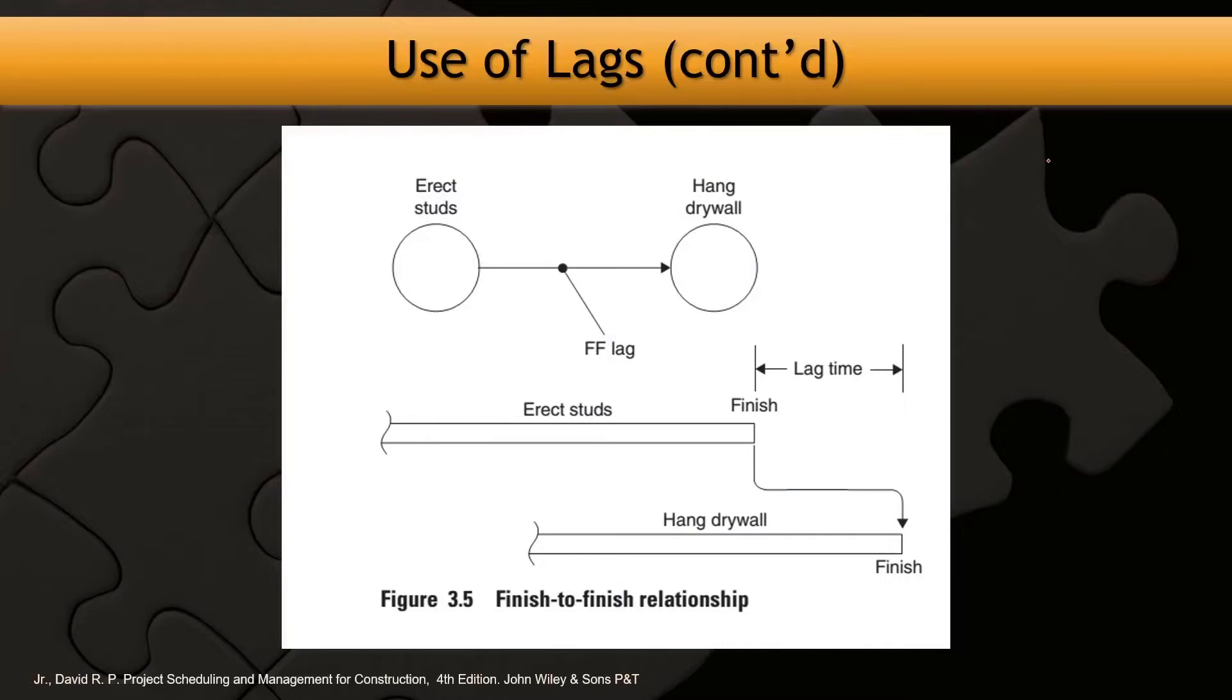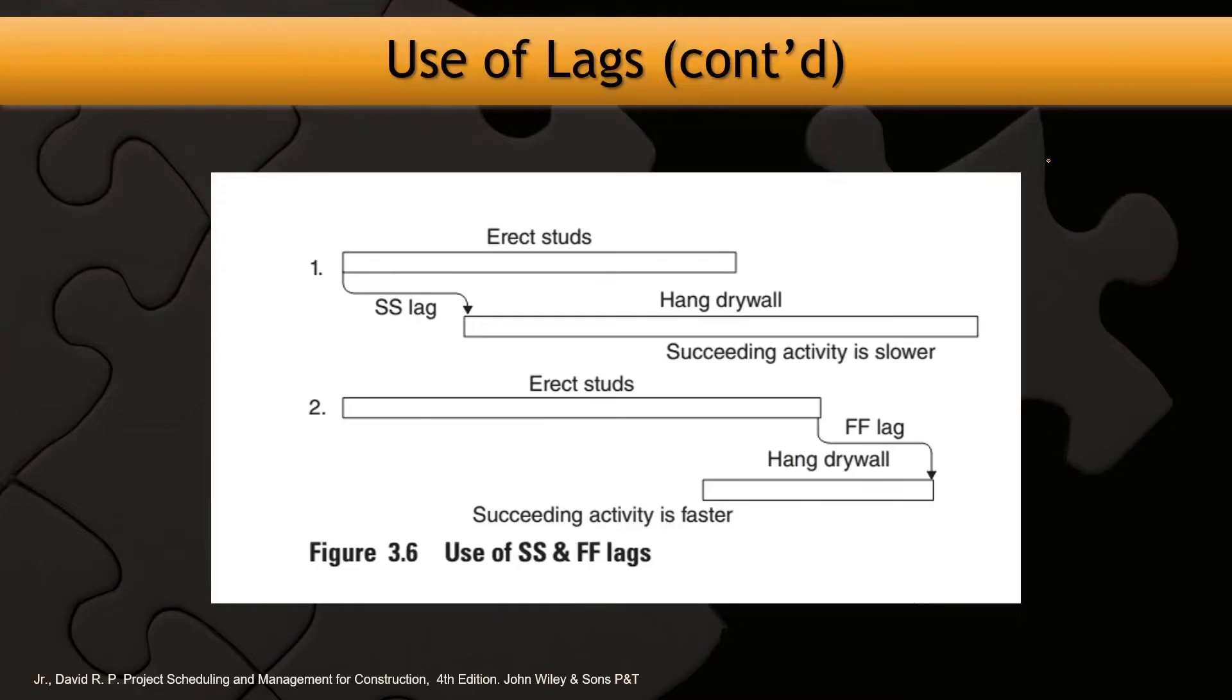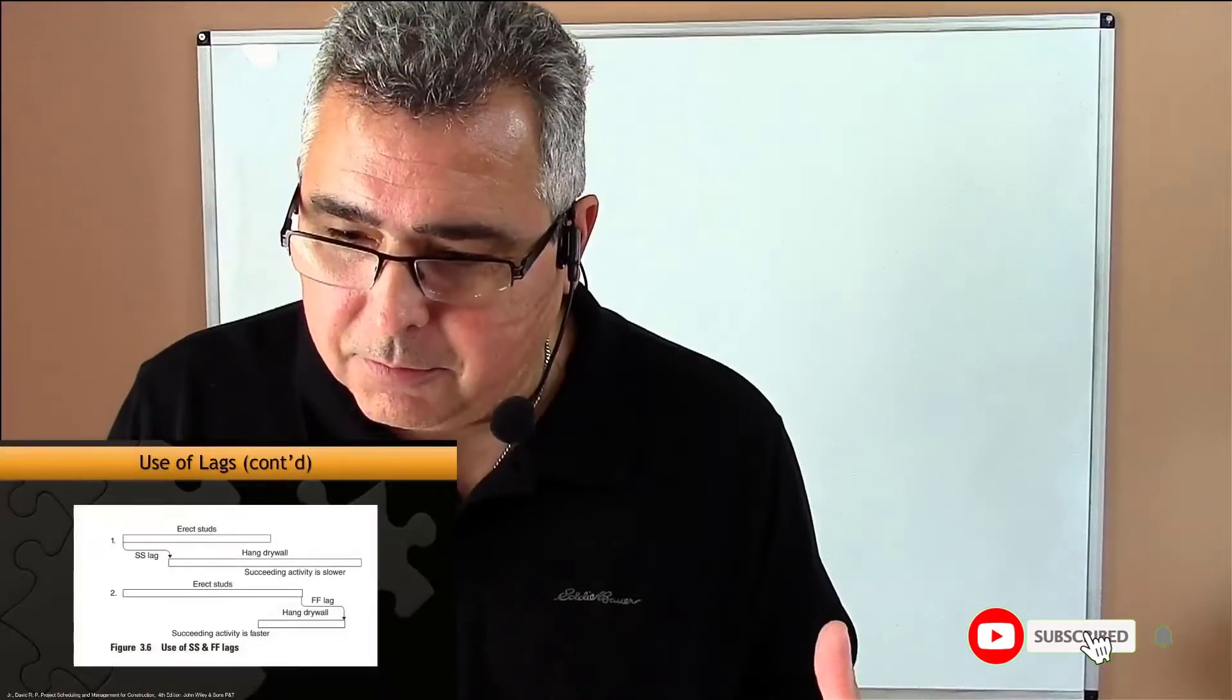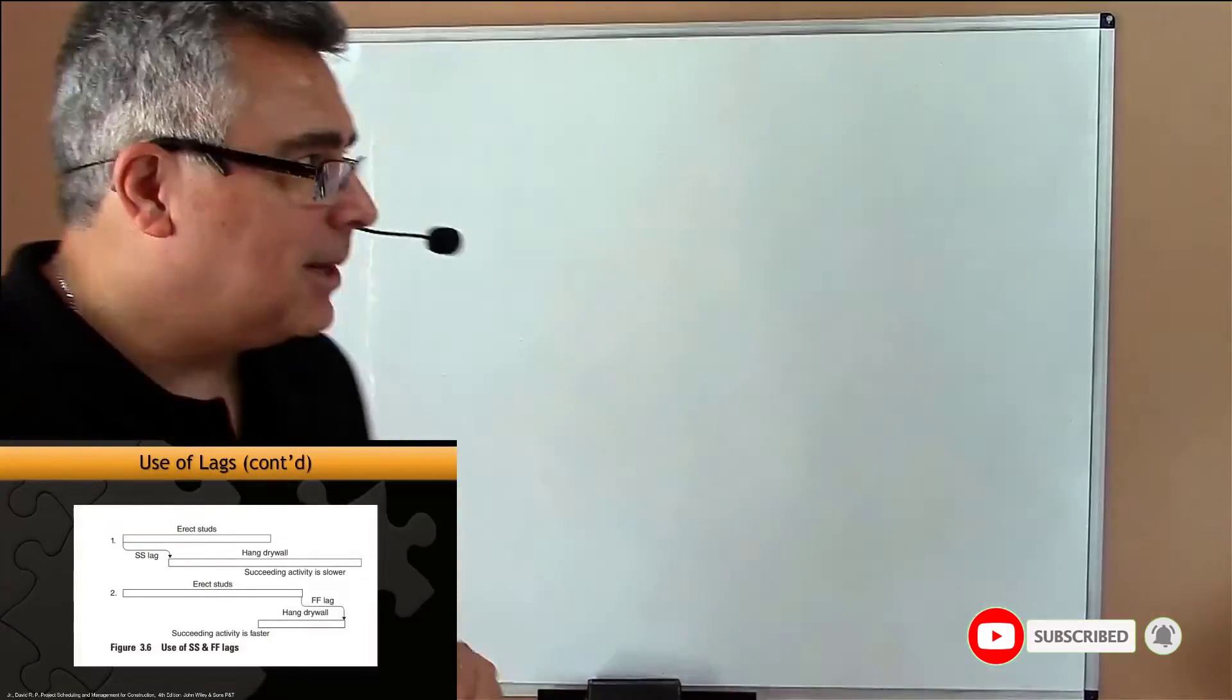And here is the trick: you have to understand the execution pace of each activity - the execution pace of each activity. So let's suppose that you have two activities.